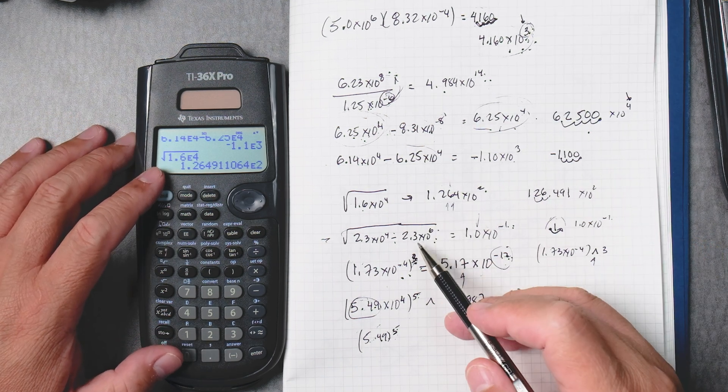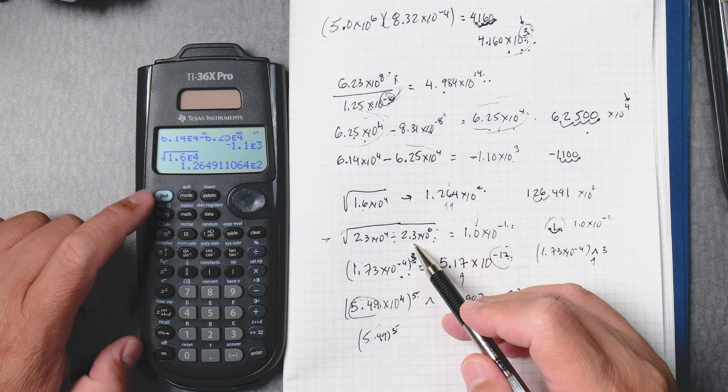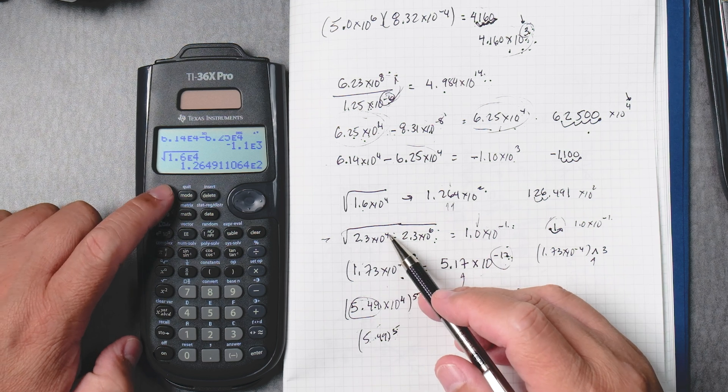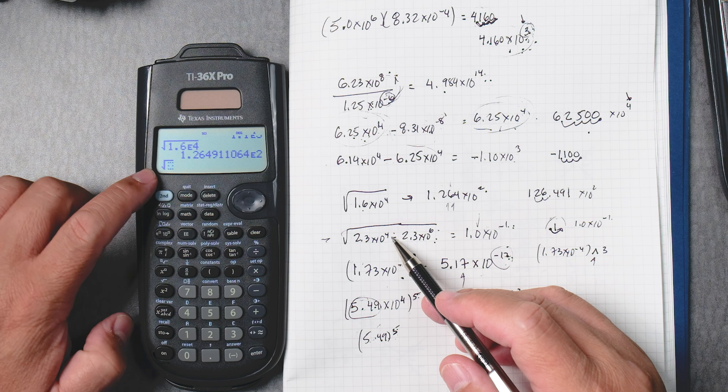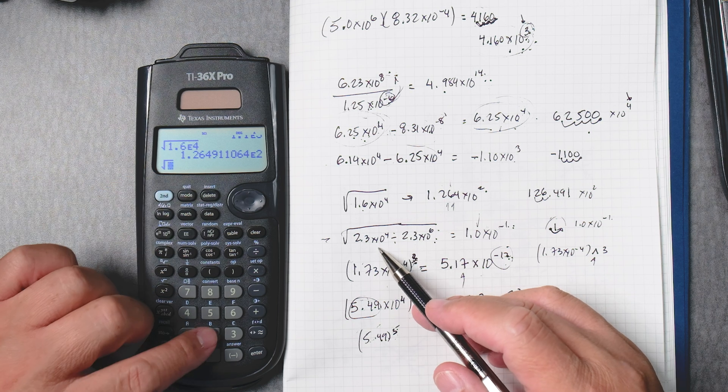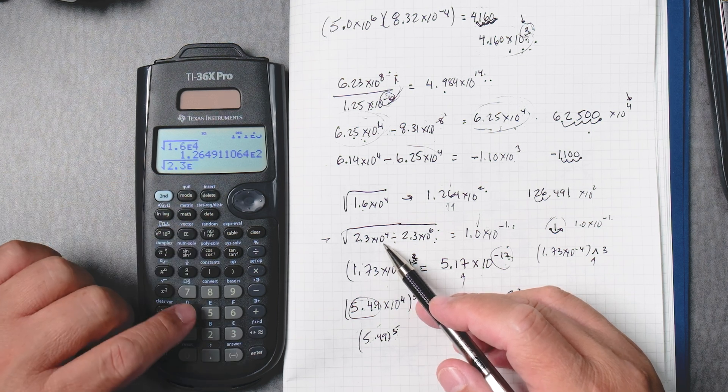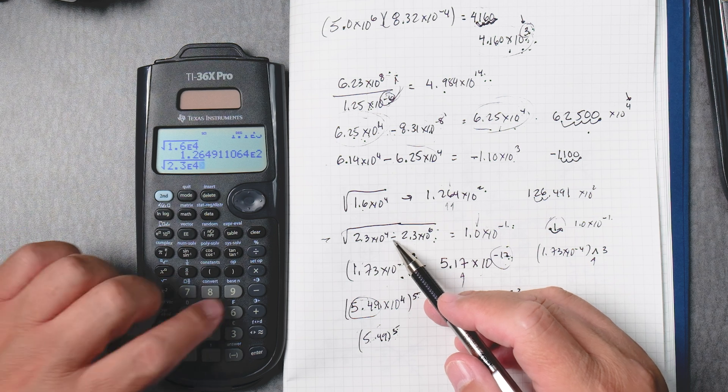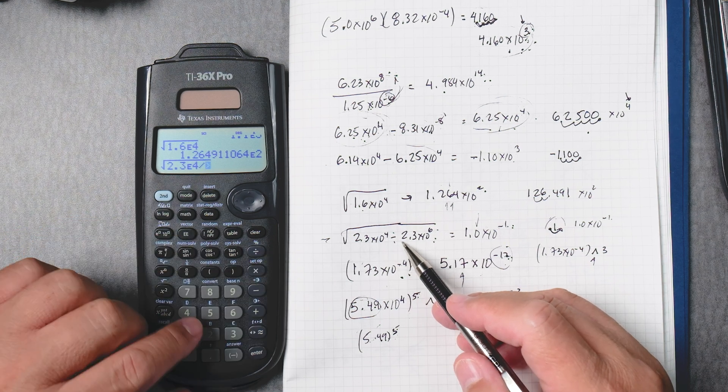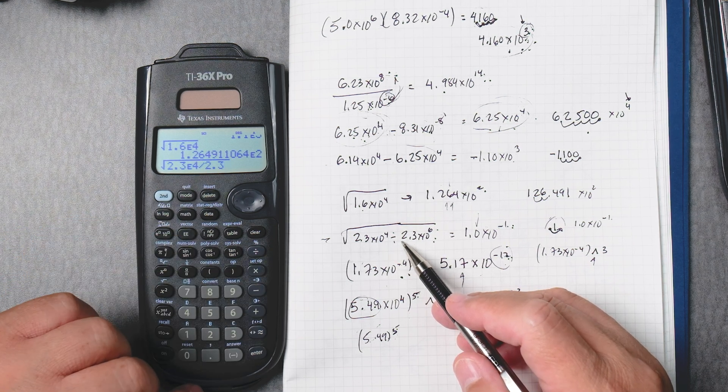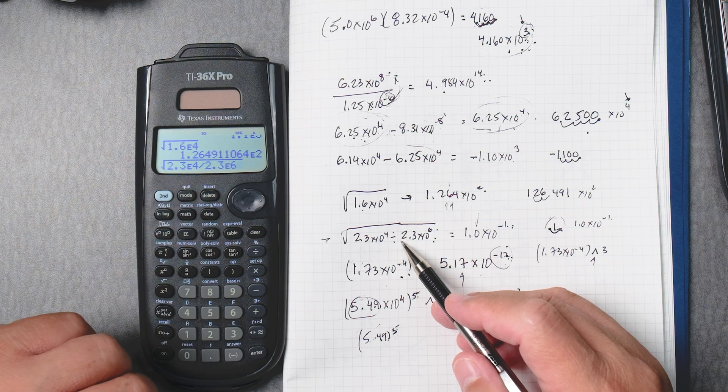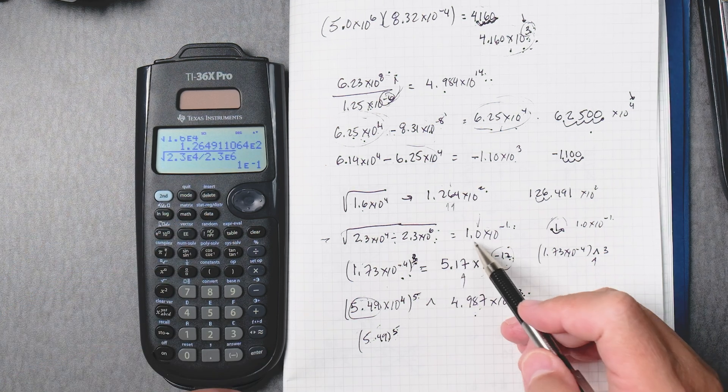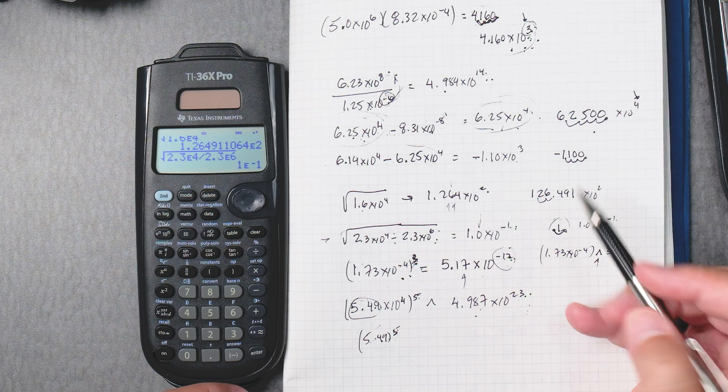Let's do this one. This one, we'll do the square root. The second x squared button to give you the square root. 2.3 double E to the fourth, divided by 2.3 double E 6, and then enter. And you get 1.0 times 10 to the minus 1. Perfect.